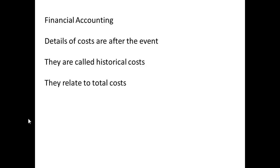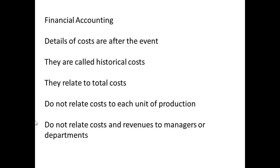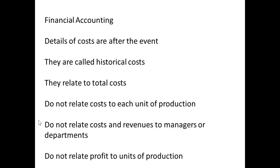They are related to the total costs, rather than to each unit of production. So there are two important points: financial accounting deals with historical costs, and they don't relate the costs to each unit of production. Which means that you can't relate costs and revenues to managers or departments, and if you can't relate them to managers or departments, you can't really relate profit to the units of production.